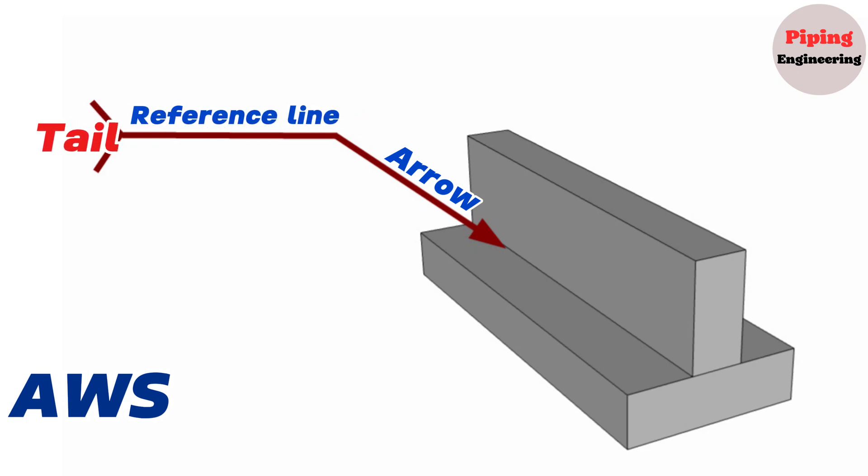The tail. The tail is the last part of the welding symbol which is drawn at the end of the reference line and used to provide additional information.